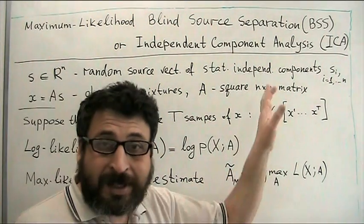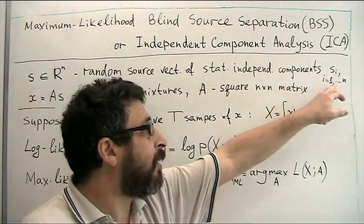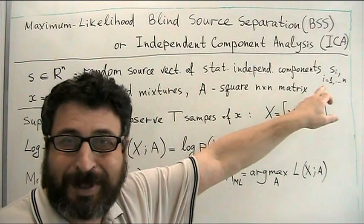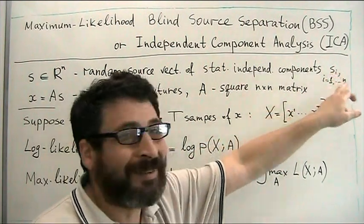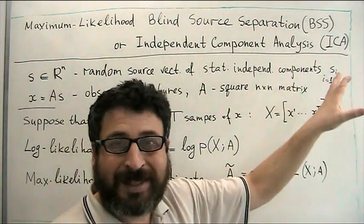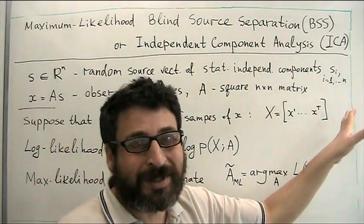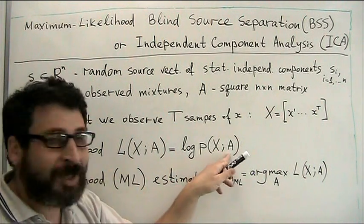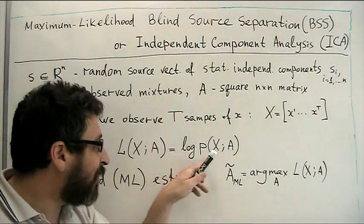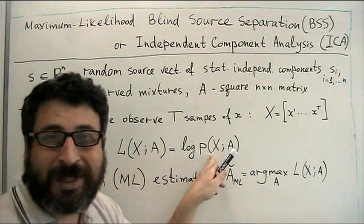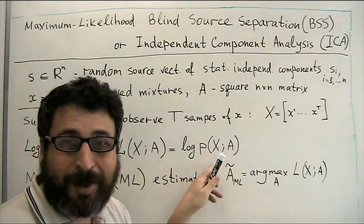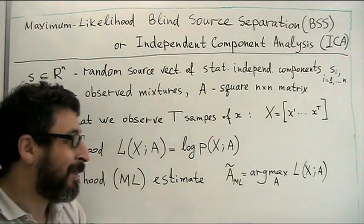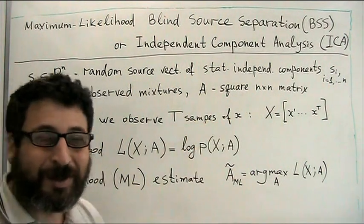We will suppose in the beginning that we know distribution of statistically independent sources S_i, and even we will say that distribution is the same for simplicity. Then, given matrix A, one can write what will be probability density function of our joint observations x.